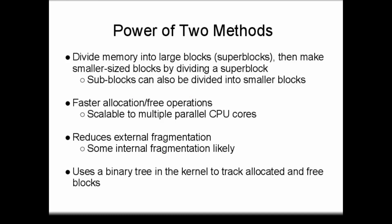In the previous lecture, I introduced the classic algorithms for memory allocation: best fit, worst fit, first fit, and next fit. Now I want to introduce algorithms that are actually used within OS kernels to perform memory allocations efficiently. These algorithms are called power of two methods, and they work by maintaining information about allocated and free blocks in a binary tree instead of a list.